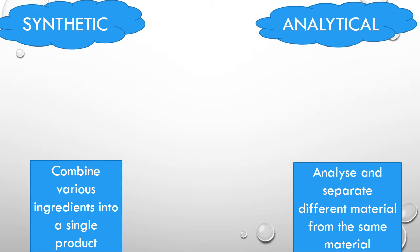Let's try to understand synthetic and analytical industry. Now these two industries are opposite of each other. In synthetic, you need two or more materials to make a final product. While in analytical, you can separate one product into different finished products.